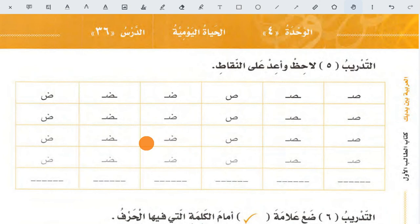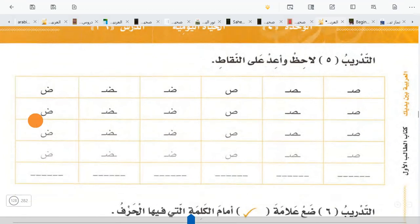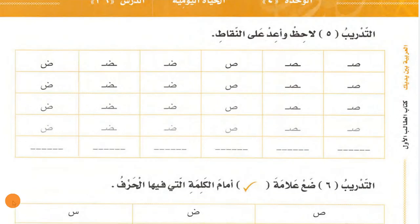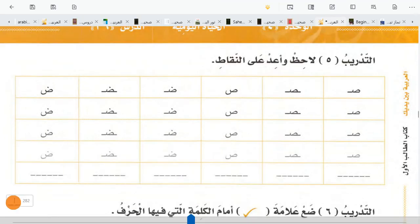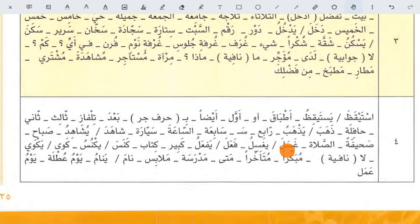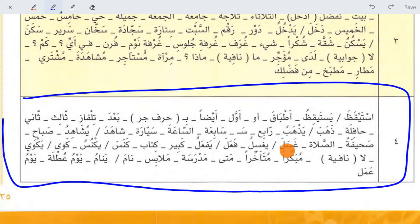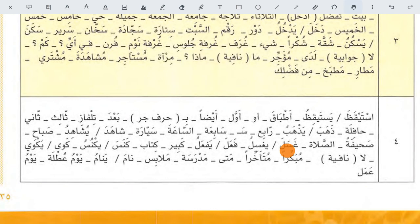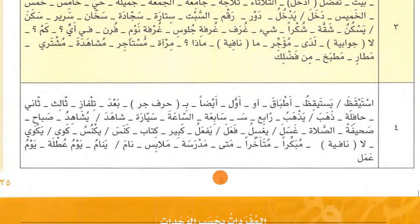Here we completed Unit Number 4. Now you need to open the vocabulary of this unit. This is the vocabulary of Unit Number 4 — you need to memorize the meaning of all these words, then write their meanings in your notebook without looking at anything. The most important thing in learning Arabic is vocabulary, so you must memorize all the vocabulary of Unit 4 which you have already studied in this unit.